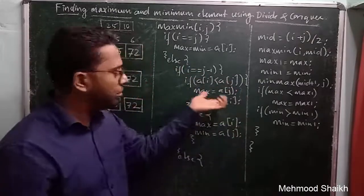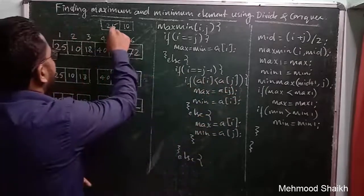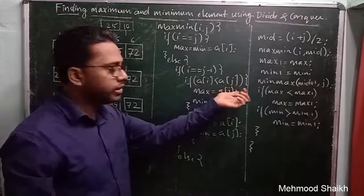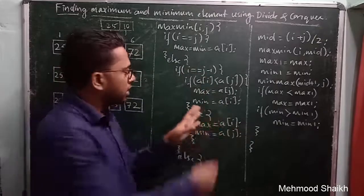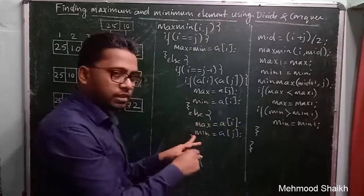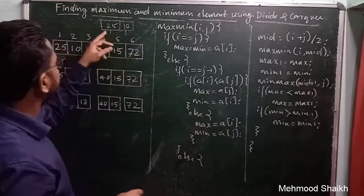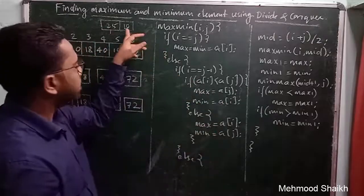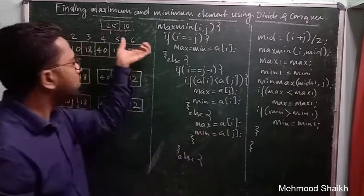The second condition: if i equals j minus 1, meaning we have exactly two elements, we compare a[i] with a[j]. If a[i] is less than a[j] then a[i] is min and a[j] is max; otherwise a[i] is max and a[j] is min. For example, 25 and 10: 25 is not less than 10, so 25 becomes maximum and 10 becomes minimum.